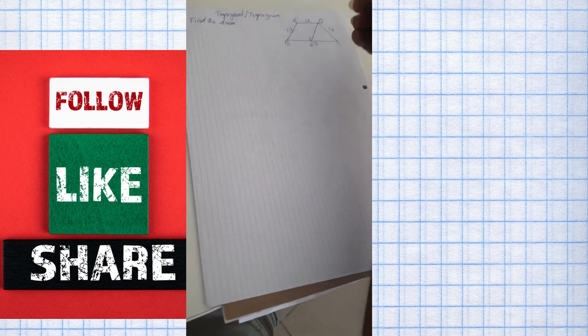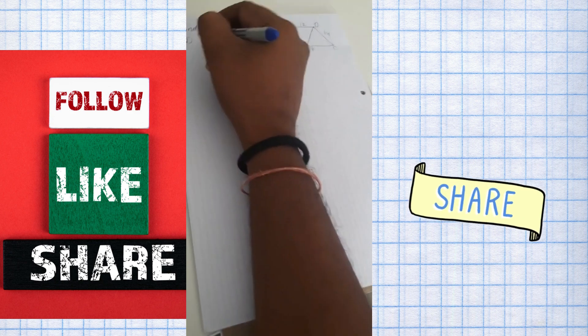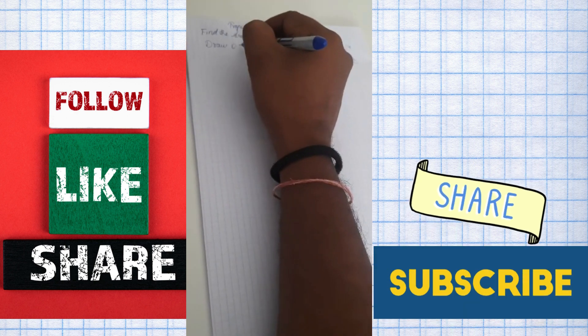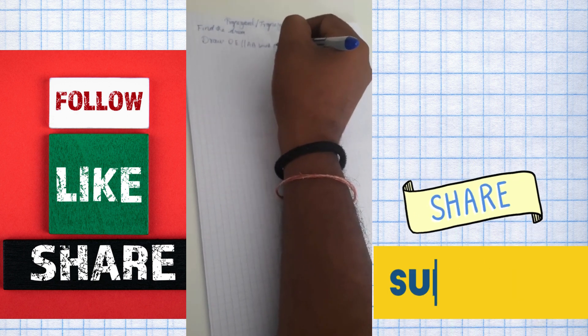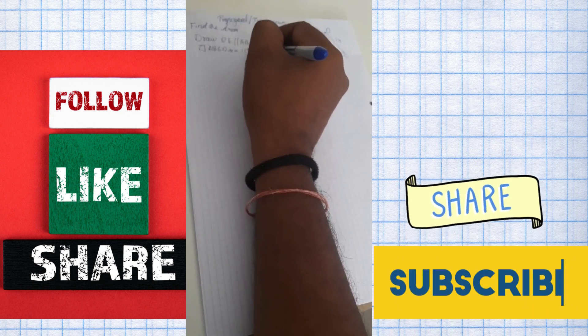Let's call it as E. Now draw DE parallel to AB such that quadrilateral A, B, E, D is a parallelogram.